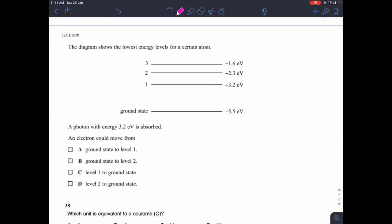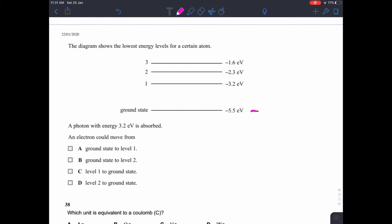Question 37. The diagram shows the lowest energy levels for a certain atom. A photon with 3.2 electron volts is absorbed. An electron could move from. This is just a case of seeing which patterns fit where. So if it's absorbed, it's going from a lower energy level to a higher energy level. So we need to just figure out what that difference is.